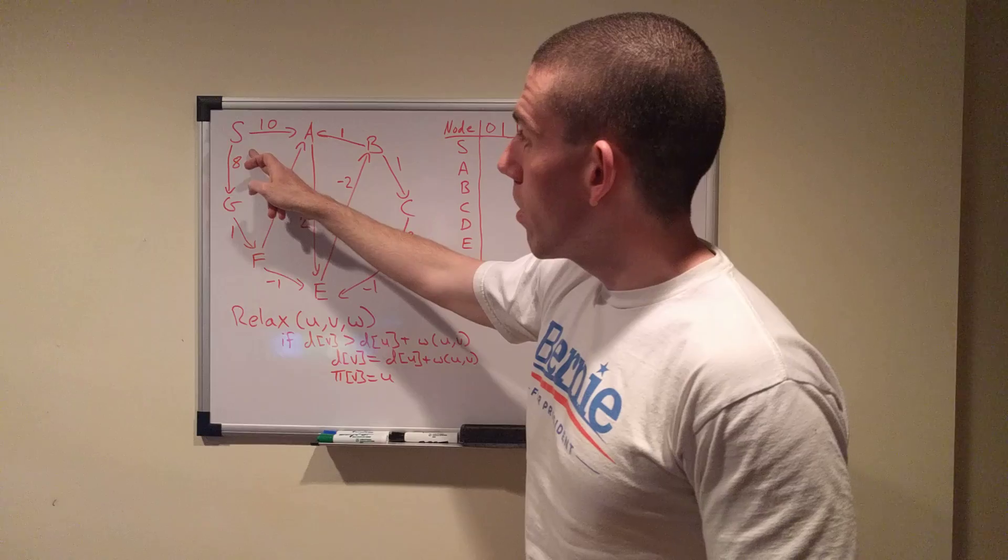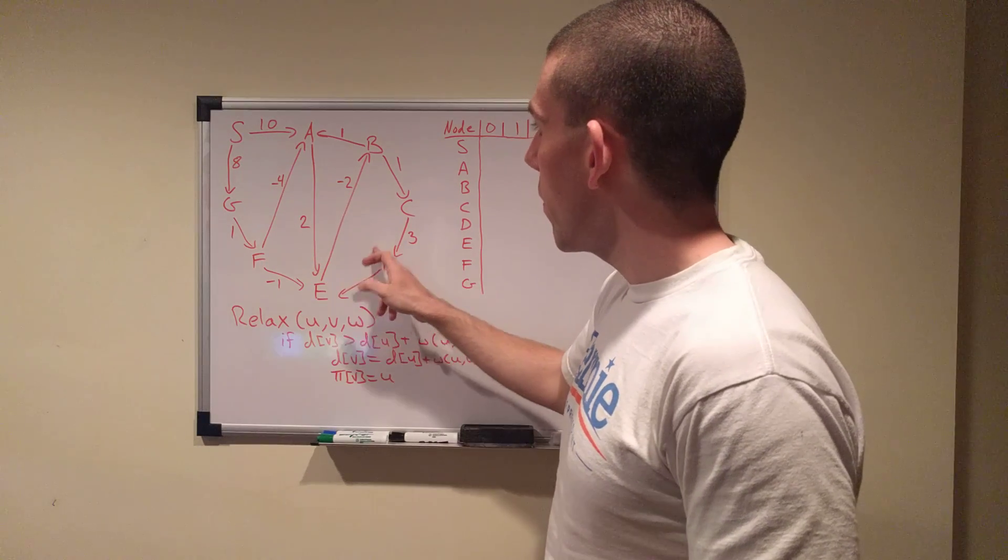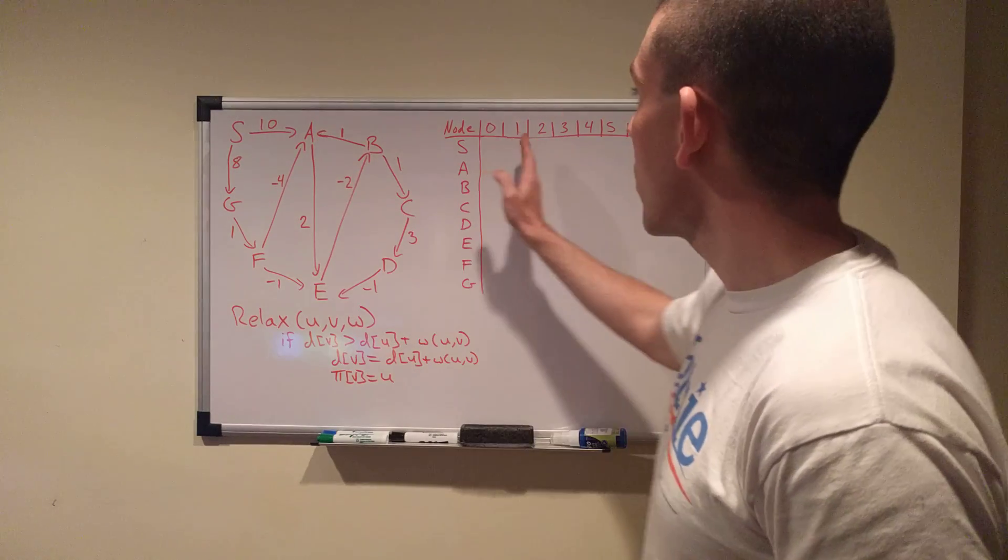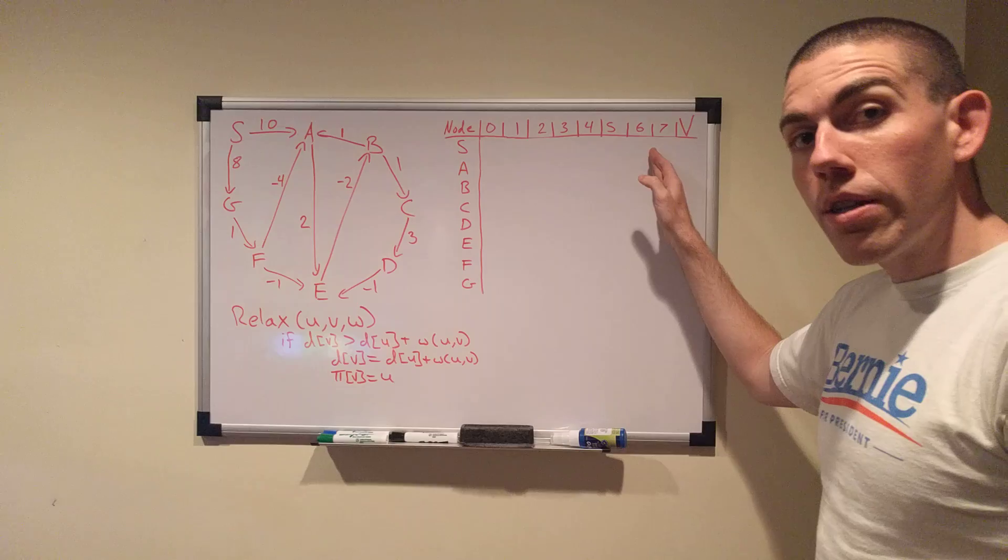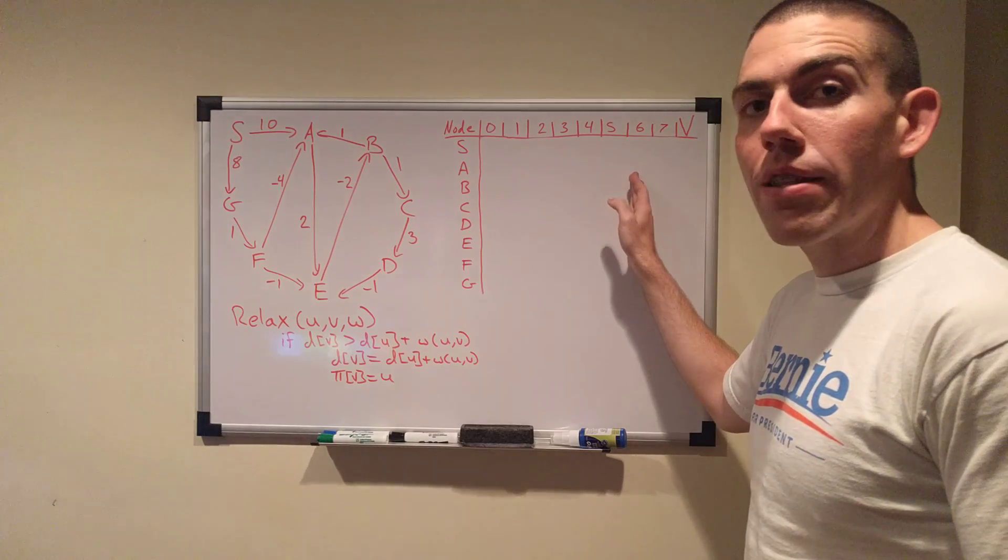And then we're going to have seven iterations. And in fact, if you count our nodes at one, two, three, four, five, six, seven, eight nodes. And so we're going to be doing V minus one, seven iterations. And that will give us the shortest paths.